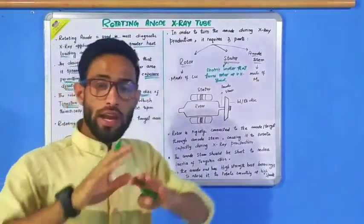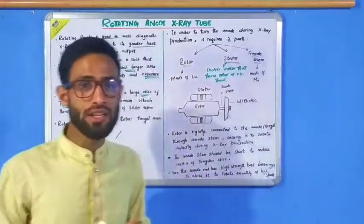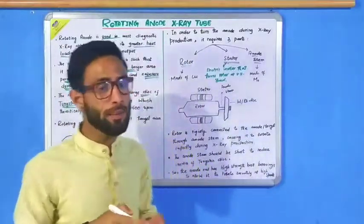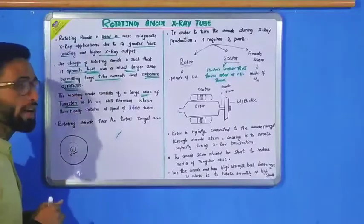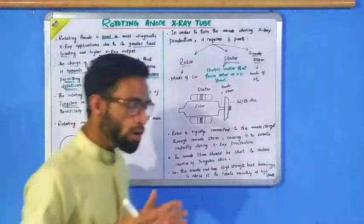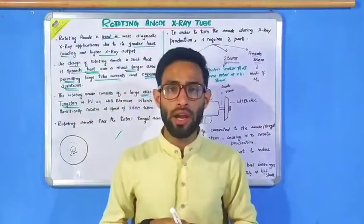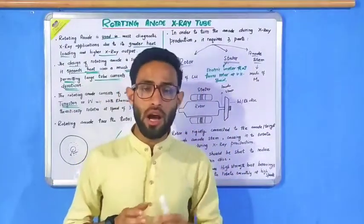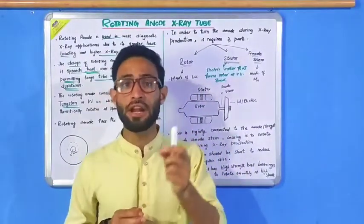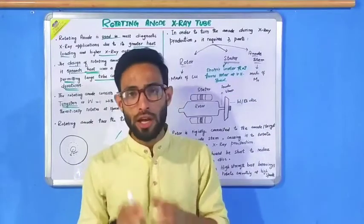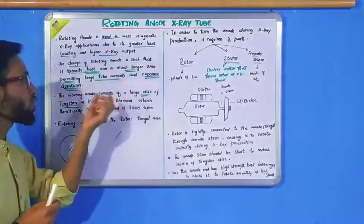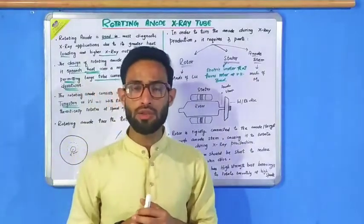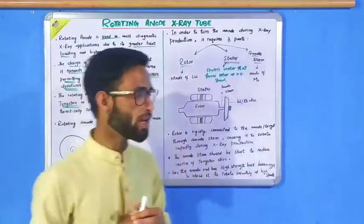The rotating anode is made of tungsten. The anode rotates at a speed of 3600 revolutions per minute — theoretically, the rotating anode speed is 3600 revs per minute.